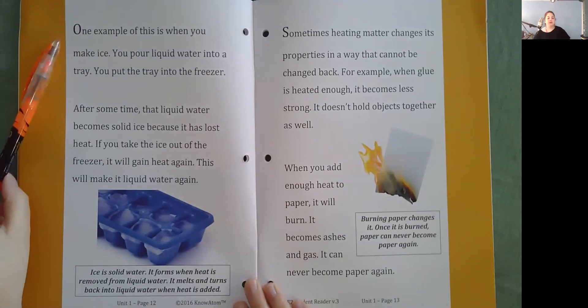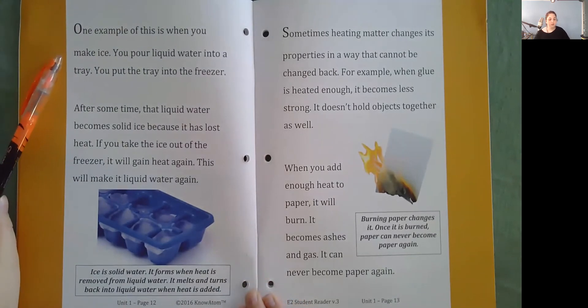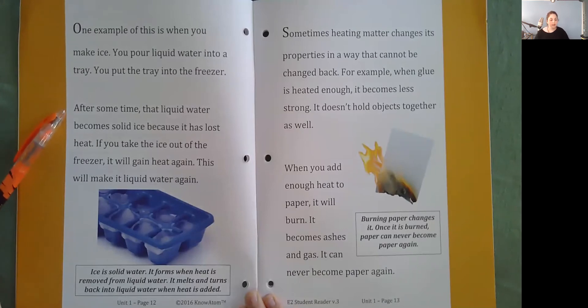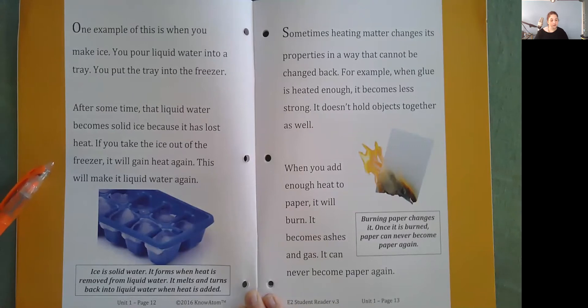One example of this is when you make ice. You pour liquid water into a tray. You put the tray into the freezer. After some time, that liquid water becomes solid ice because it has lost heat. If you take the ice out of the freezer, it will gain heat again. This will make it liquid water again.